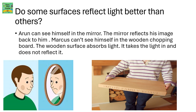Do some surfaces reflect light better than others? Arun can see himself in the mirror — the mirror reflects his image back to him. Marcus can't see himself in the wooden chopping board. The wooden surface absorbs light; it takes the light in and does not reflect it.